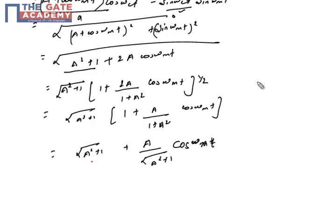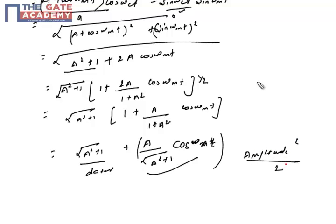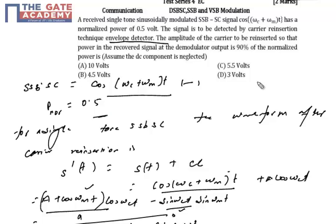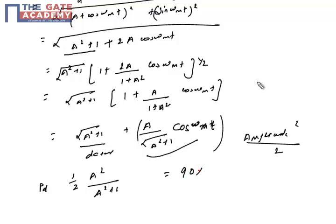In this result, we have a DC term √(A² + 1) and an AC term A/√(A² + 1)·cos(ωmT). The power of a sinusoidal signal is amplitude² / 2. So the power of the AC term is (1/2) · (A/√(A² + 1))² = A²/(2(A² + 1)). This power is given to be 90% of normalized power, i.e., 90% of 0.5. The 1/2 and 0.5 cancel, giving A²/(A² + 1) = 0.9.